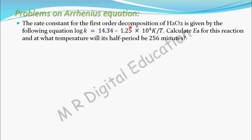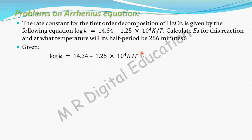The rate constant for this first order reaction of H₂O₂ is given in the form of an equation. From this equation we have to calculate the value of Ea, that is the activation energy. We also have to calculate at what temperature the half-life period will be 256 minutes.